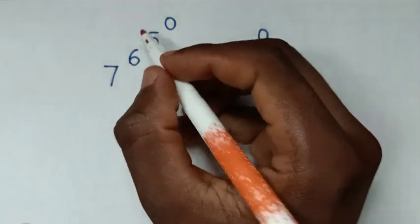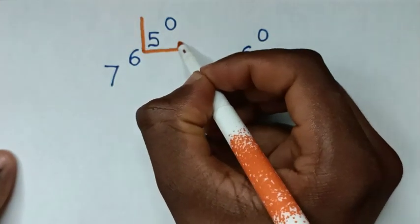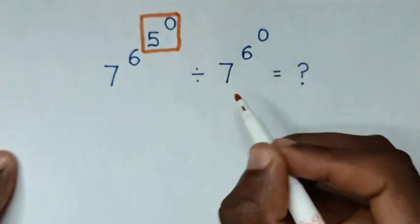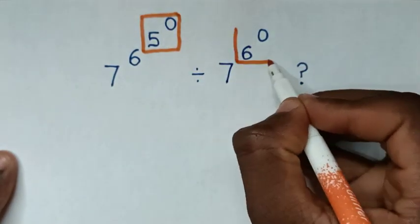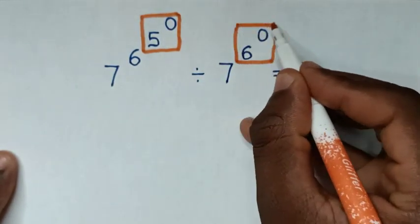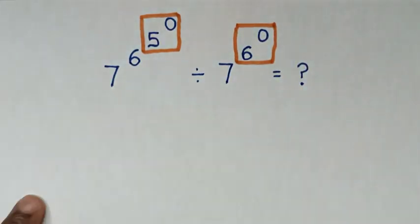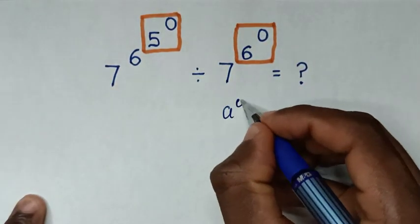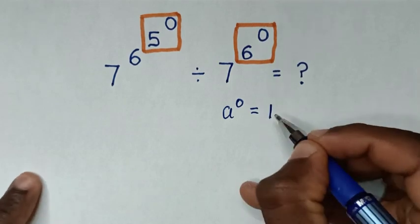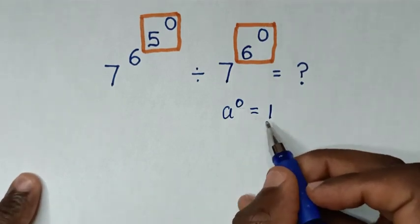From here 5^0 and from here 6^0 is in the form of a^0 equals 1. That means any number to the power 0 is equal to 1.